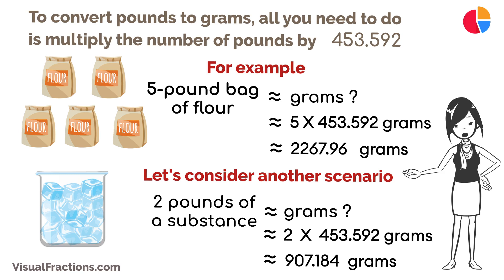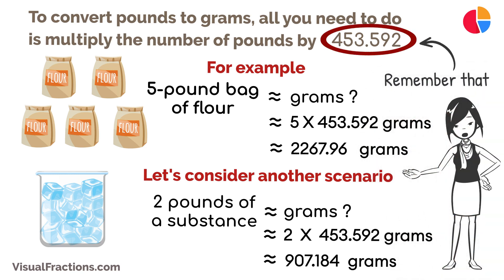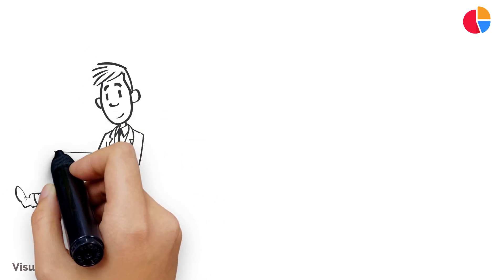And there you have it — converting pounds to grams is a simple process. Remember that one pound equals approximately 453.592 grams. With a bit of practice, you'll become skilled at making this conversion, allowing you to work with weight measurements more effectively whether in daily life or scientific endeavors.